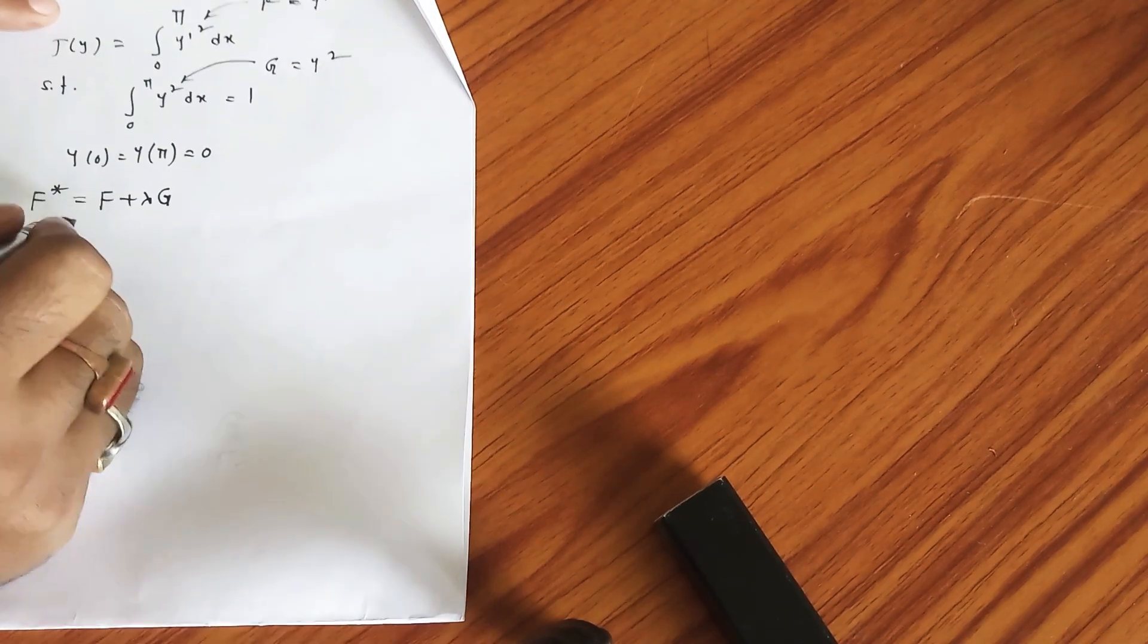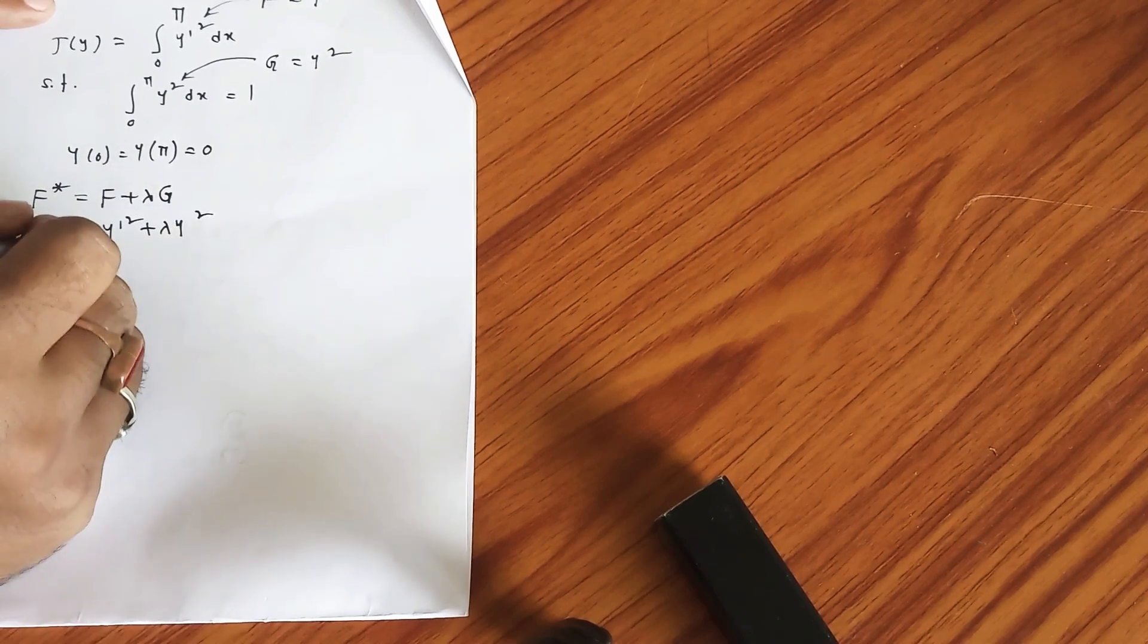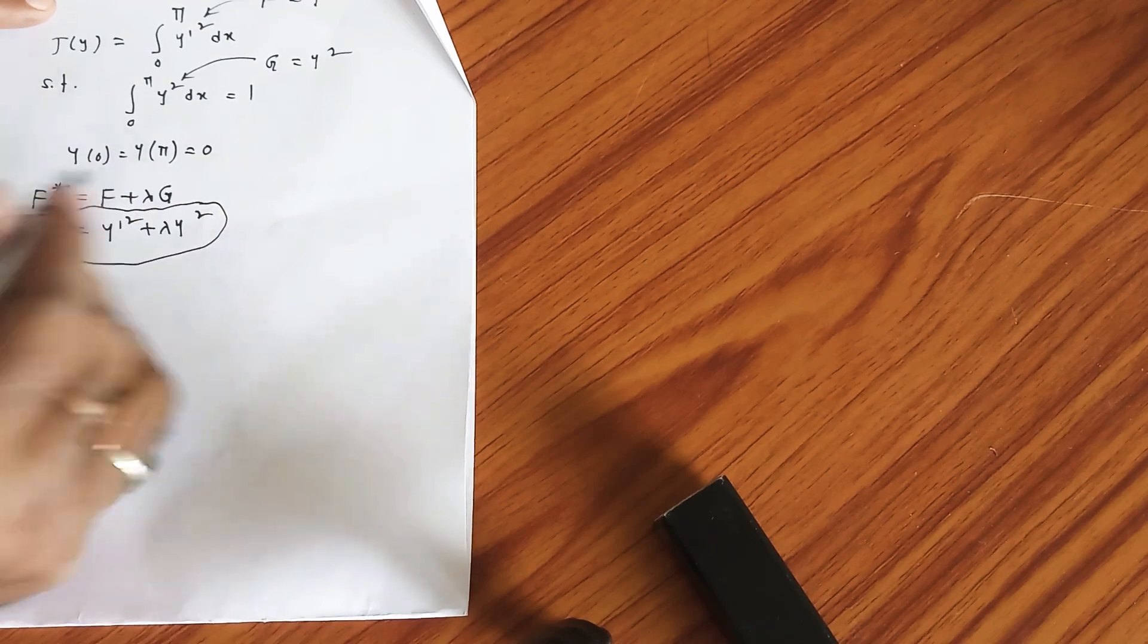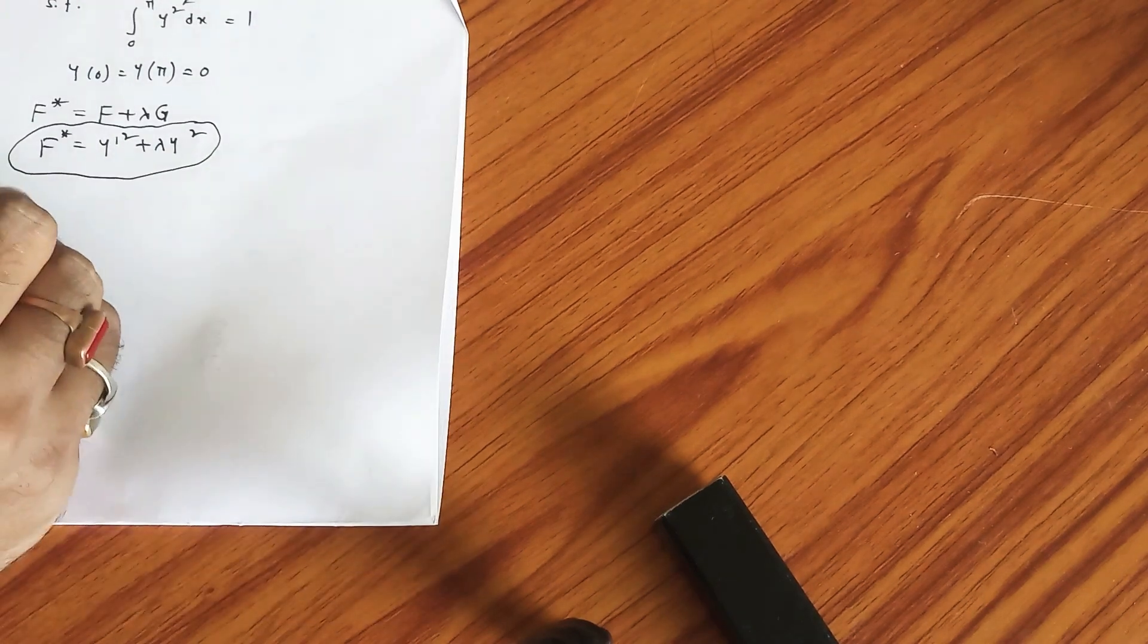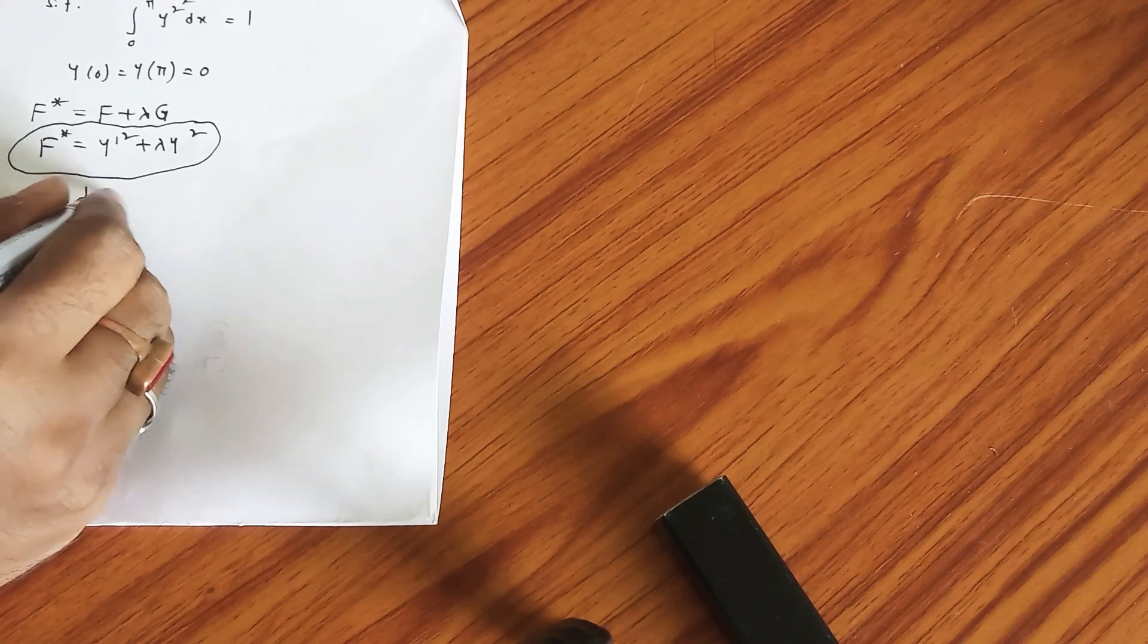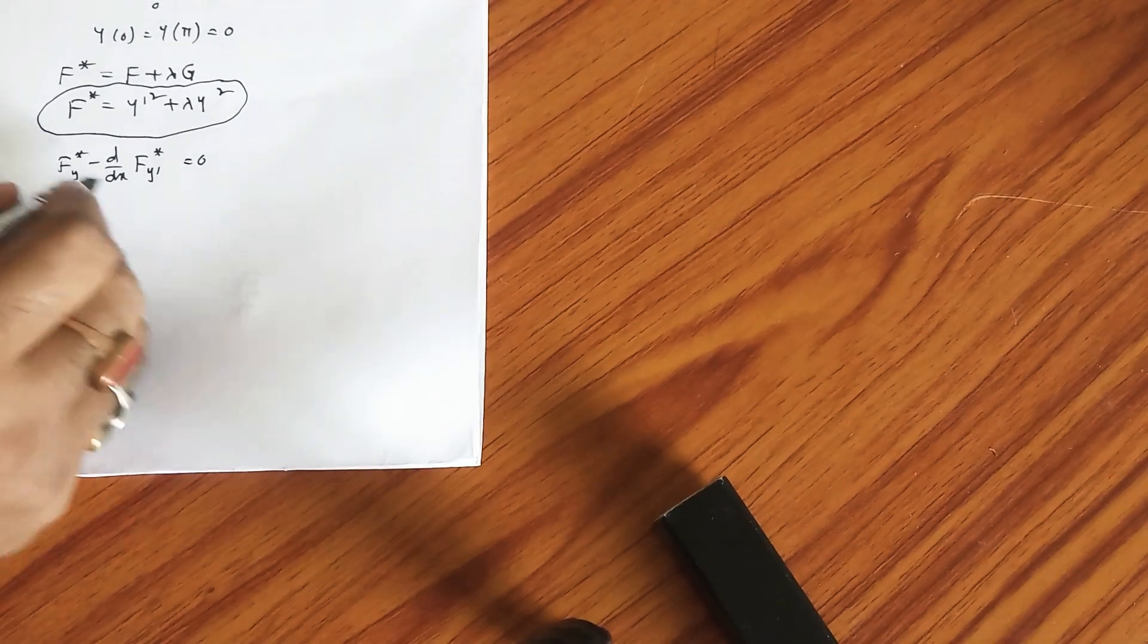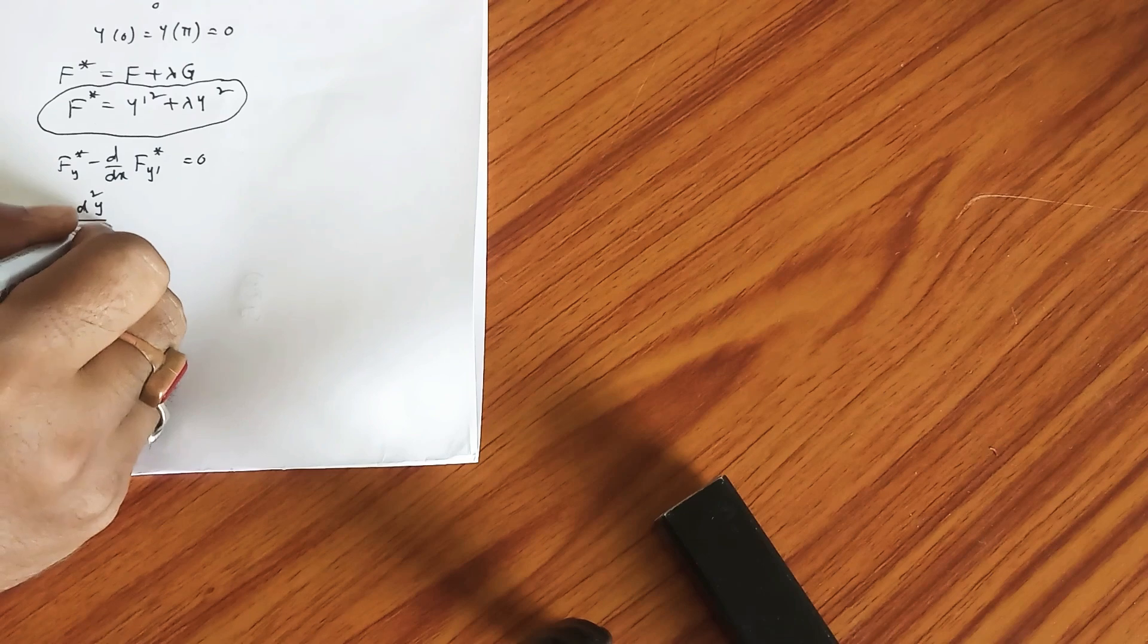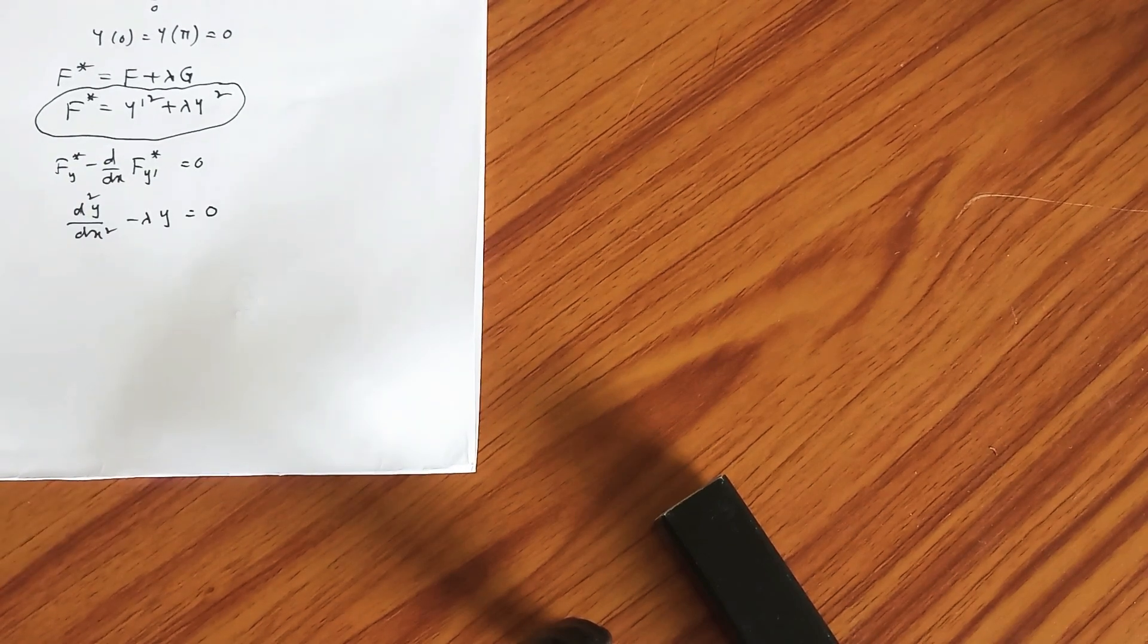Now use the Euler-Lagrange equation: fy* minus d/dx of fy'* equals 0. It will ultimately give you d²y/dx² minus lambda y equals 0.